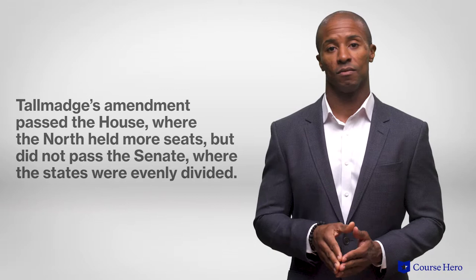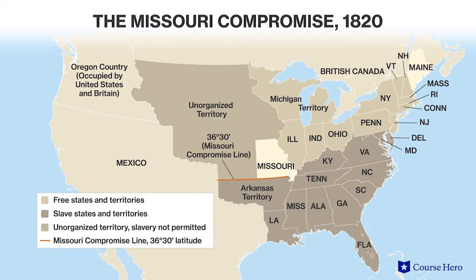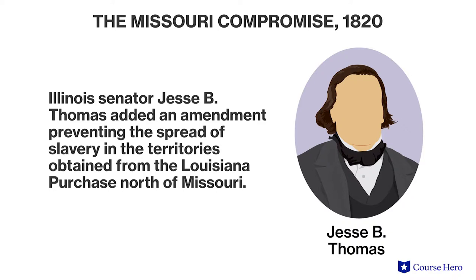Congress did not resolve the debate over Missouri until it reconvened in December 1819. During the Congressional recess, the Senate passed the bill, permitting Maine to enter the Union as a free state and allowing Missouri to enter as a slave state. Additionally, Illinois Senator Jesse B. Thomas added an amendment preventing the spread of slavery in the Louisiana Purchase north of Missouri. The bill passed both houses on March 3, 1820, with the help of Kentucky Senator Henry Clay.